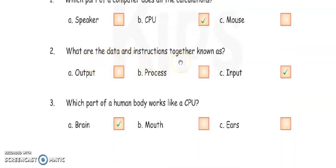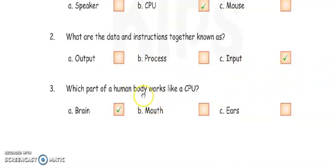What are the data and instructions together known as? It is output, process, or input? Right answer is input. You have to tick here. Which part of the human body works like a CPU? CPU is the brain, so the brain. So answer is brain, and you have to tick here.